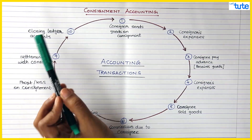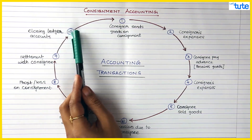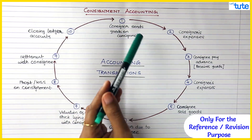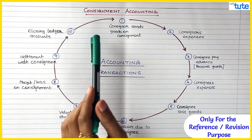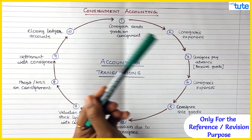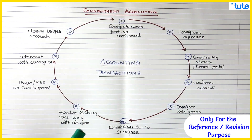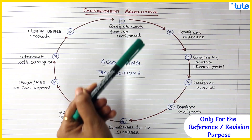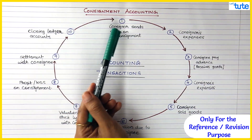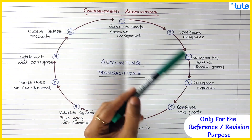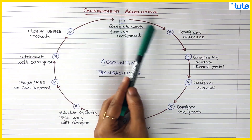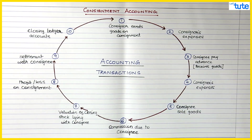You are not required to remember this cycle — it is just for your reference. In almost all the sums this is the sequence of transactions, so I've prepared it for quick revision. Sometimes people forget to do the valuation of closing stock, so this is just for quick reference. You need not remember the exact sequence, and they are not going to ask you this cycle. Further, we'll see the journal entries regarding these accounting transactions.